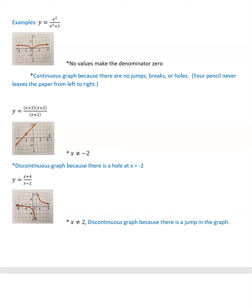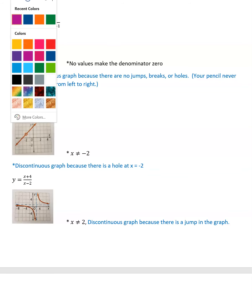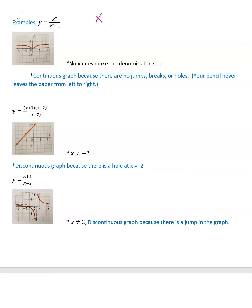First example: y = x²/(x² + 1). Looking at that denominator x² + 1, if you set it equal to 0 and solve, you get x² = −1. We can't take the square root of negative 1, so there are no numbers that make the denominator 0 — plugging in positive or negative numbers always gives a positive result.